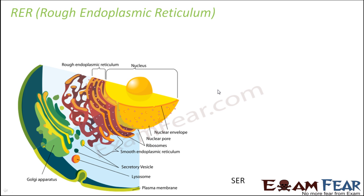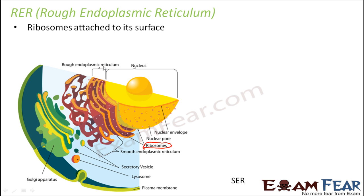Let us talk about rough endoplasmic reticulum. These are those endoplasmic reticulum which have ribosomes attached to their surface. Ribosomes are structures present inside the cell which are responsible for synthesis of proteins — extremely important structures. Due to the presence of ribosomes, the surface is granular or rough in appearance, and that is why they are called rough endoplasmic reticulum. You can see small dot-like structures on the rough ER — those are nothing but ribosomes.